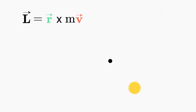In the case of circular motion, r and v are always perpendicular, so we can just multiply the magnitudes together, and the sign tells us which way we are going around the circle.